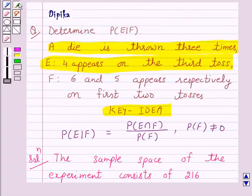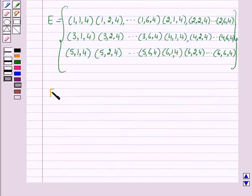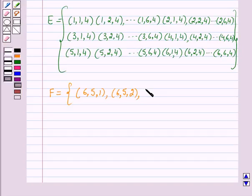So again, we are given F is the event that 6 and 5 appear respectively on first two tosses. So F is the set of elements which have 6 on the first and 5 on the second throw. So the elements of F are (6,5,1), (6,5,2), (6,5,3), (6,5,4), (6,5,5), (6,5,6).